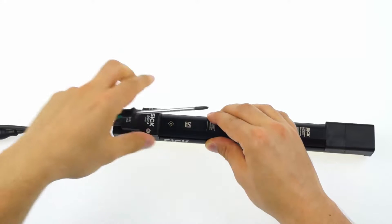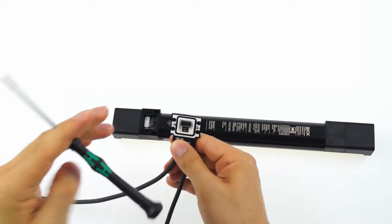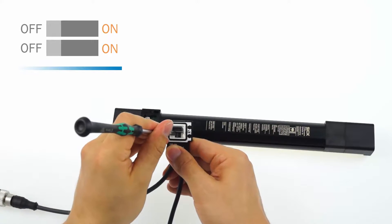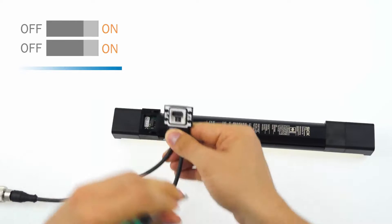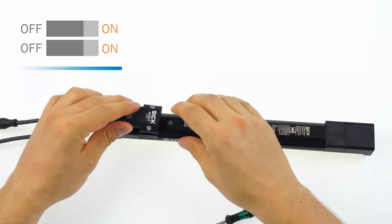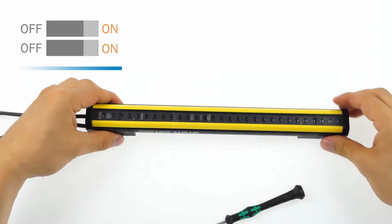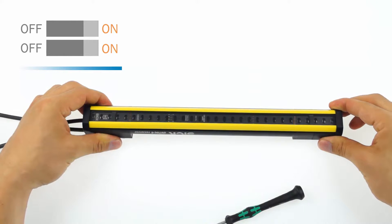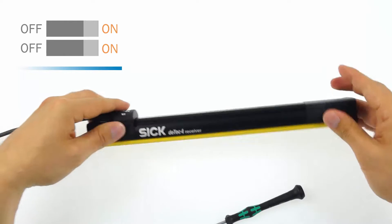In the first step, detach the system plug. Set both of the dip switches to on and put the plug back on the device. Switch on the power. The field LEDs are flashing green and yellow now. Disconnect the device from the power supply within 10 seconds.